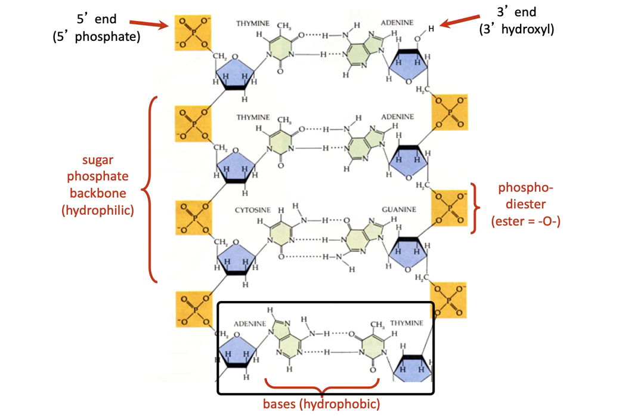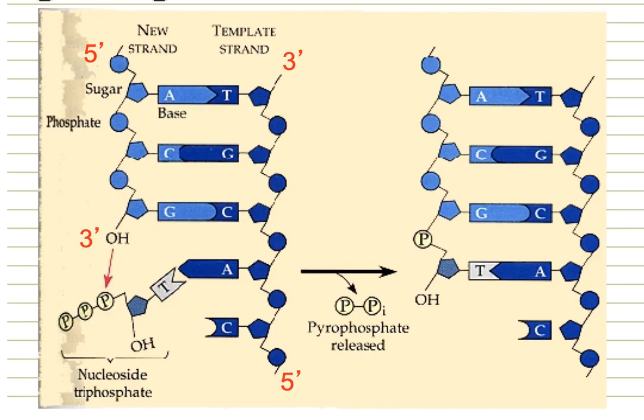By about 3.8 billion years ago, DNA had become the primary holder of genetic information, and a way to copy it was needed. The high fidelity was due partly to DNA being protected by forming a double helix, and also because having two strands allowed not only polymerization but also checking for mutations in the DNA double strand.